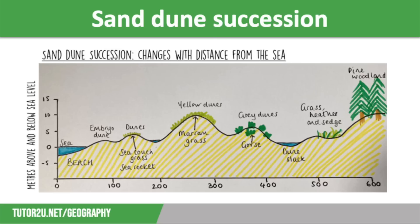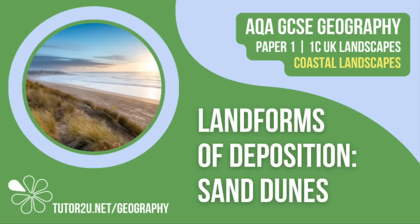Sometimes a blowout may occur, which is a big depression caused by strong winds removing all of the sand following the loss of the protected vegetation layer. That concludes this Tutor2U revision video focusing on landforms of deposition, specifically sand dunes. Thank you for watching.